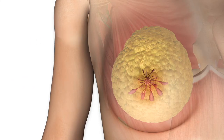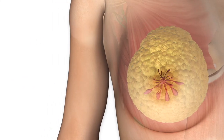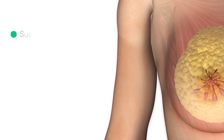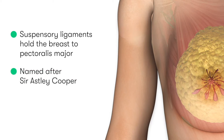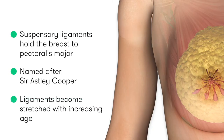The breast is anchored to the pectoralis major muscle by suspensory ligaments named after the famous English surgeon and anatomist Sir Astley Cooper. These suspensory ligaments of Cooper become more loose and stretch with increasing age, and this is a significant contributing factor to the breast becoming ptotic, or low hanging, as the patient gets older.